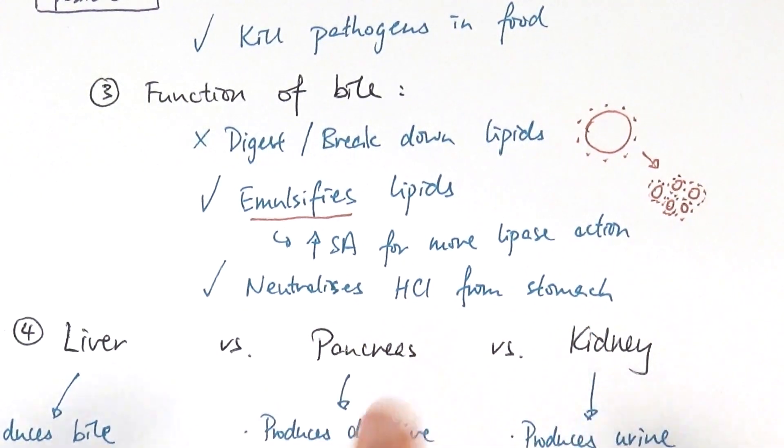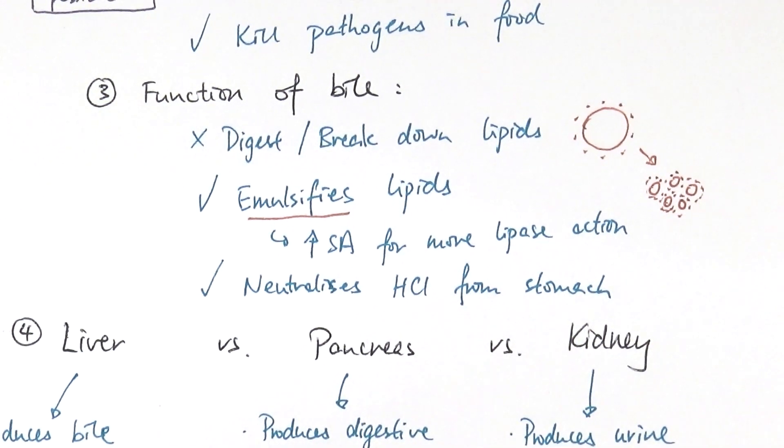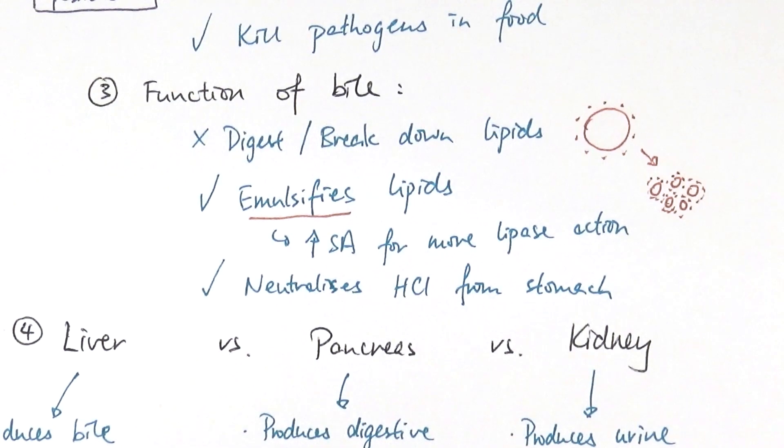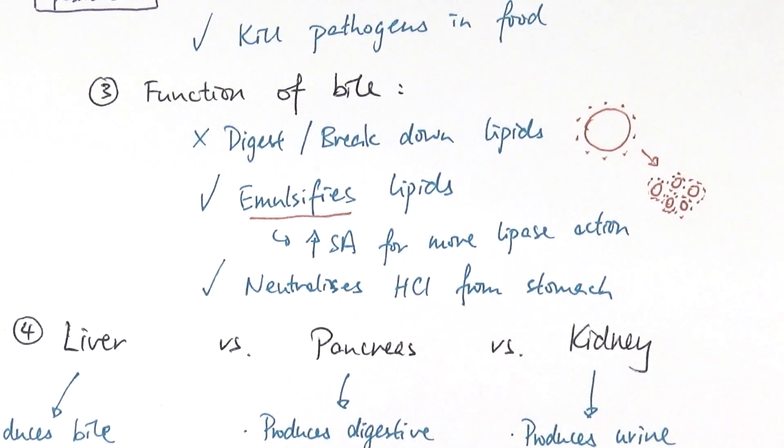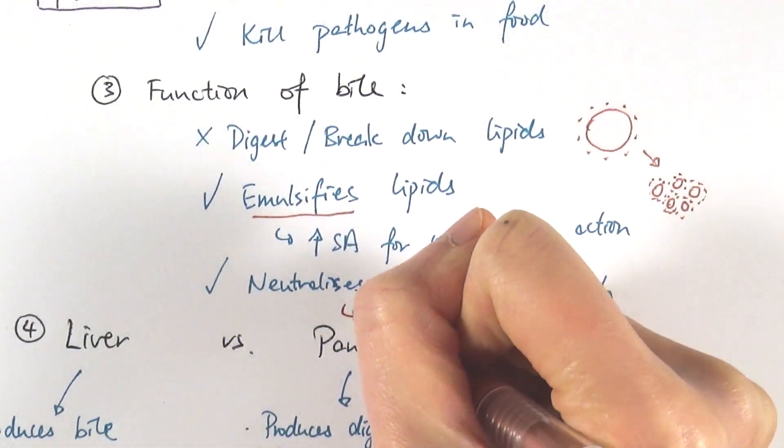then the acid from the stomach will denature all of the other enzymes such as lipase and other carbohydrates produces amylase in the small intestine, which is not ideal. So again, neutralizing the hydrochloric acid from the stomach to do so.